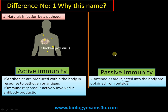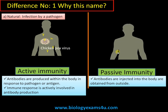Whereas in passive immunity, antibodies are injected from outside — the body has no role. The pathogen is present and we are injecting antibodies from outside. The body is simply receiving the antibodies passively.